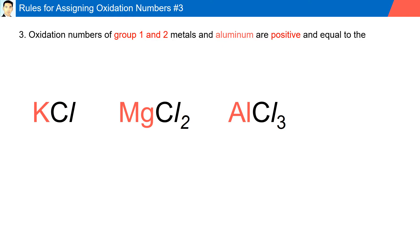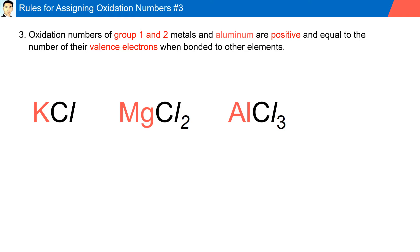Rule number three: oxidation numbers of group one, group two metals, and aluminum are positive and always equal to the number of their valence electrons when bonded to other elements. For example, potassium (K), found in group one, is always plus one. Magnesium, found in group two, has an oxidation number of plus two. Aluminum, found in group 13 with three valence electrons, has an oxidation number of plus three.